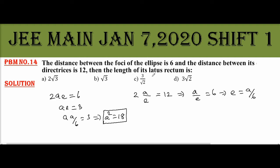Now, what is asked in the problem? Find the length of its latus rectum. The length of the latus rectum is given by the formula 2b²/a. So, we want to find b².